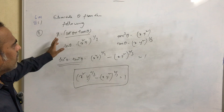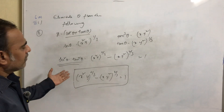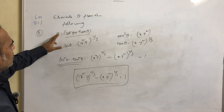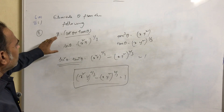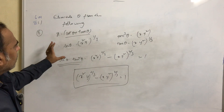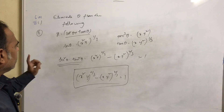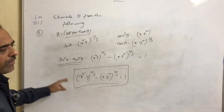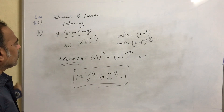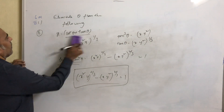This is a somewhat complicated problem — we might get this in four marks. We need to think through the steps carefully to determine how to eliminate theta. Finally, whatever the terms, they should be converted into one of: sin squared theta plus cos squared theta equals 1, secant squared theta minus tan squared theta equals 1, or cosecant squared theta minus cot squared theta equals 1. Thank you.